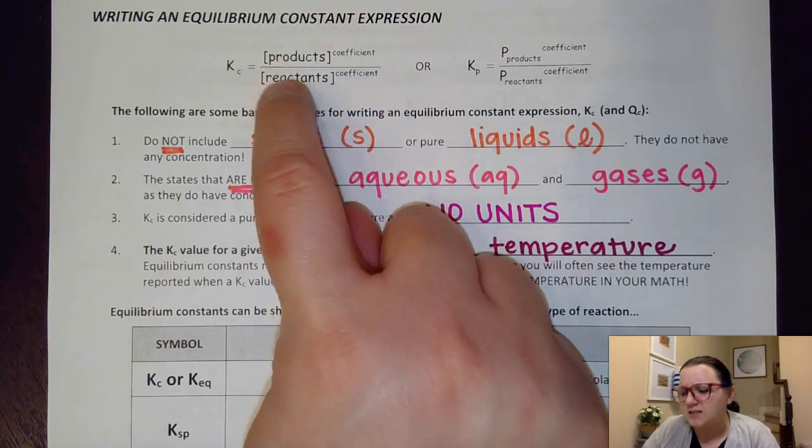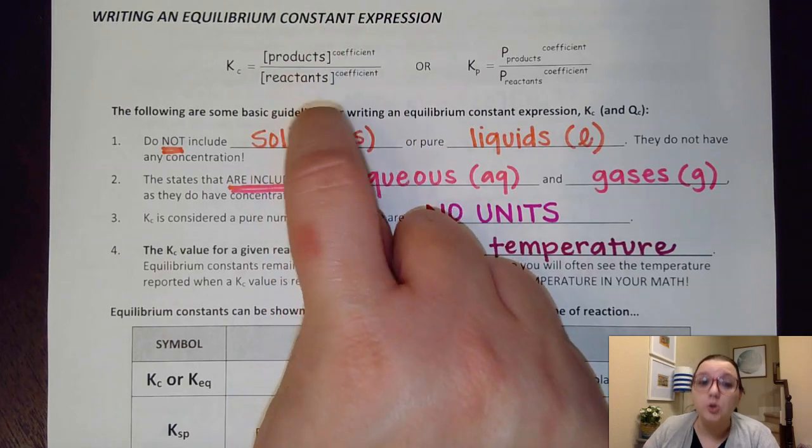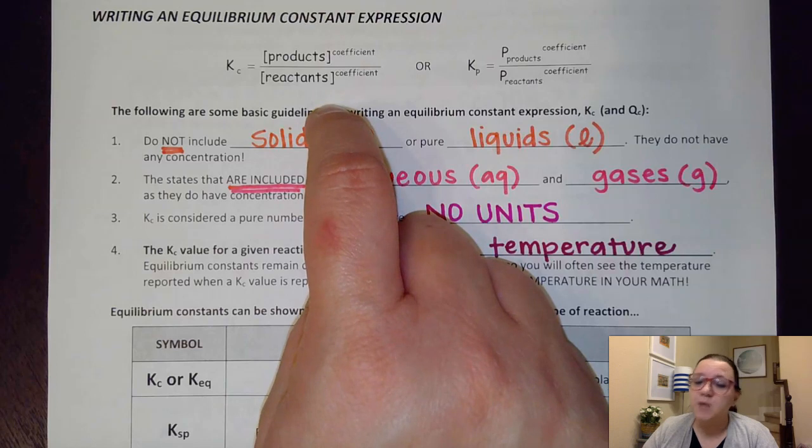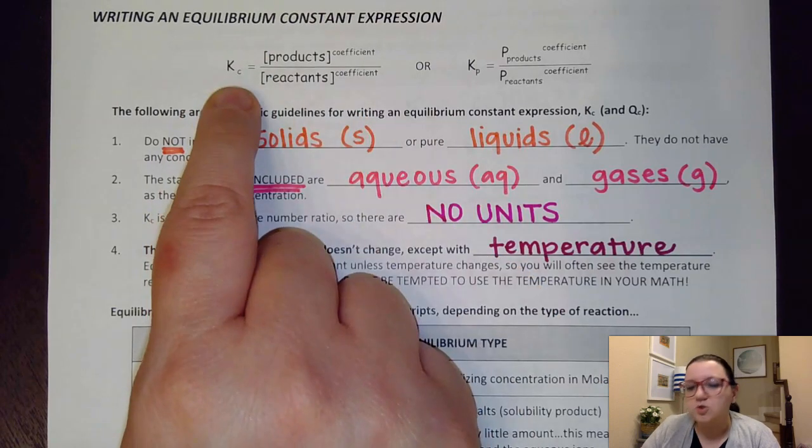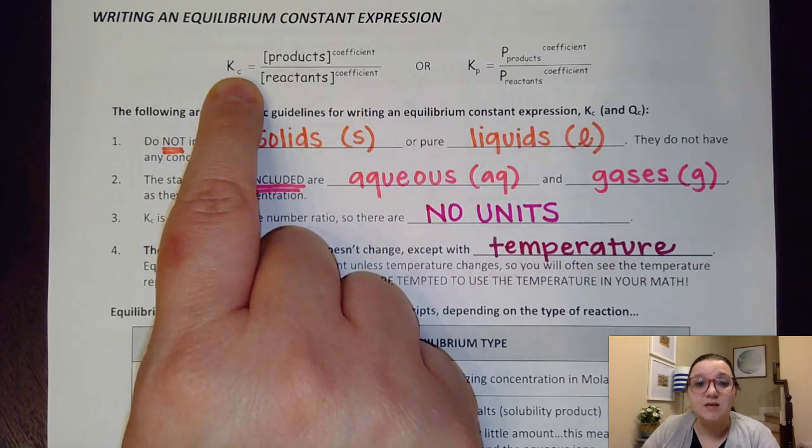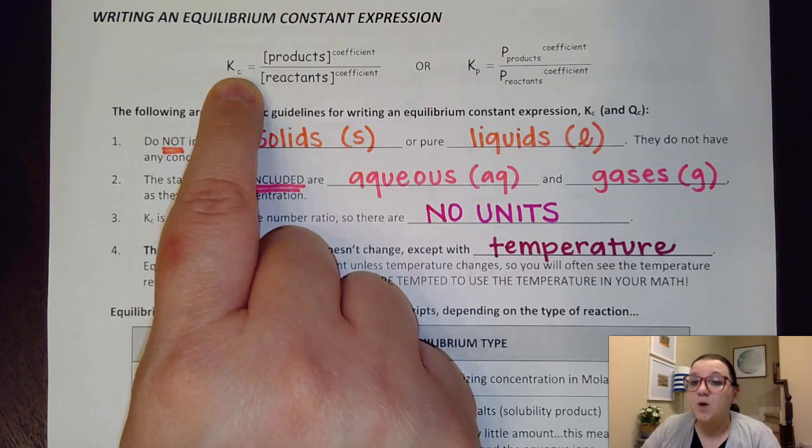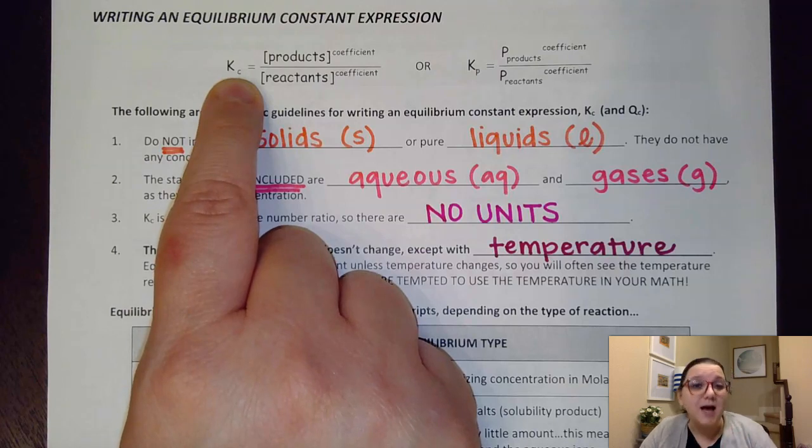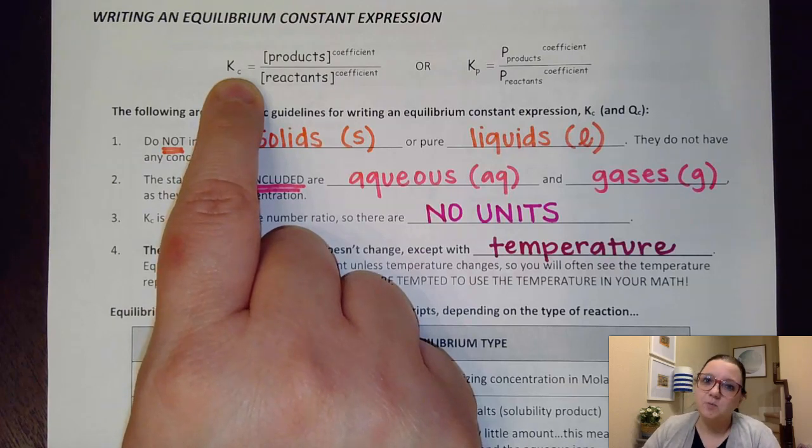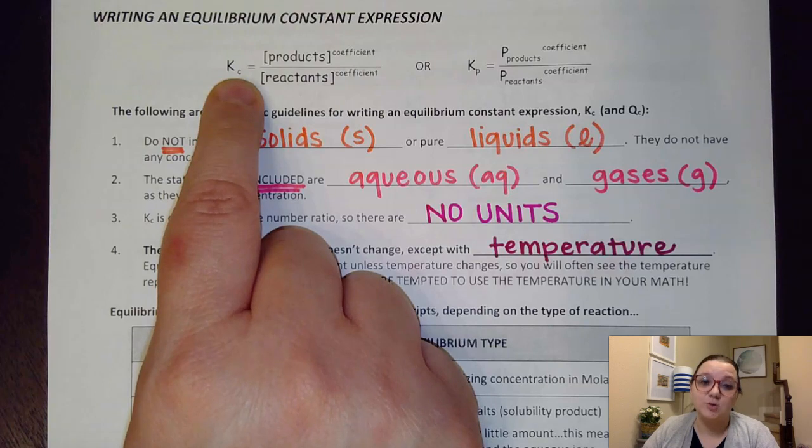Hopefully by this point we're familiar with this idea that an equilibrium constant is equal to the concentration of the products over the concentration of reactants raised to exponents that are equal to their coefficients.